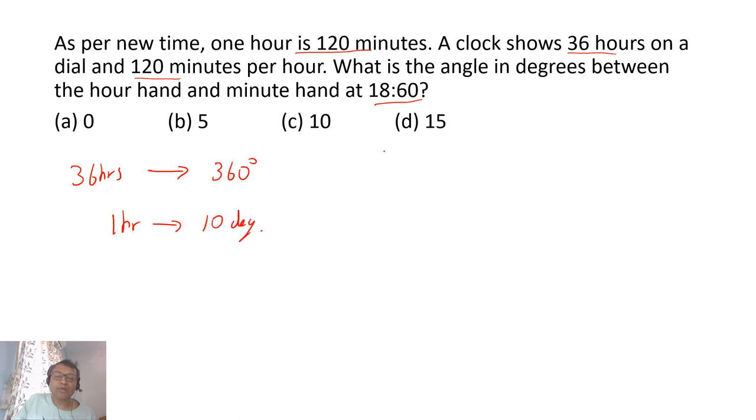So we understand one hour is 10 degrees, so distance between one hour is 10 degrees. Now when you say 18:60, 18 means it's exactly half, that means the hour hand will be at the bottom - 18, so the hour hand will be down. Minute hand will be 60. 60 is down because total is 120 minutes, so 60 will be exactly down. Total is 36 hours, so the hour hand will be exactly between 18 hours and 19 hours. 18 hours will be at the bottom and 19 will be next, so the hour hand will be exactly between 18 and 19. The angle between these two is half the hour.